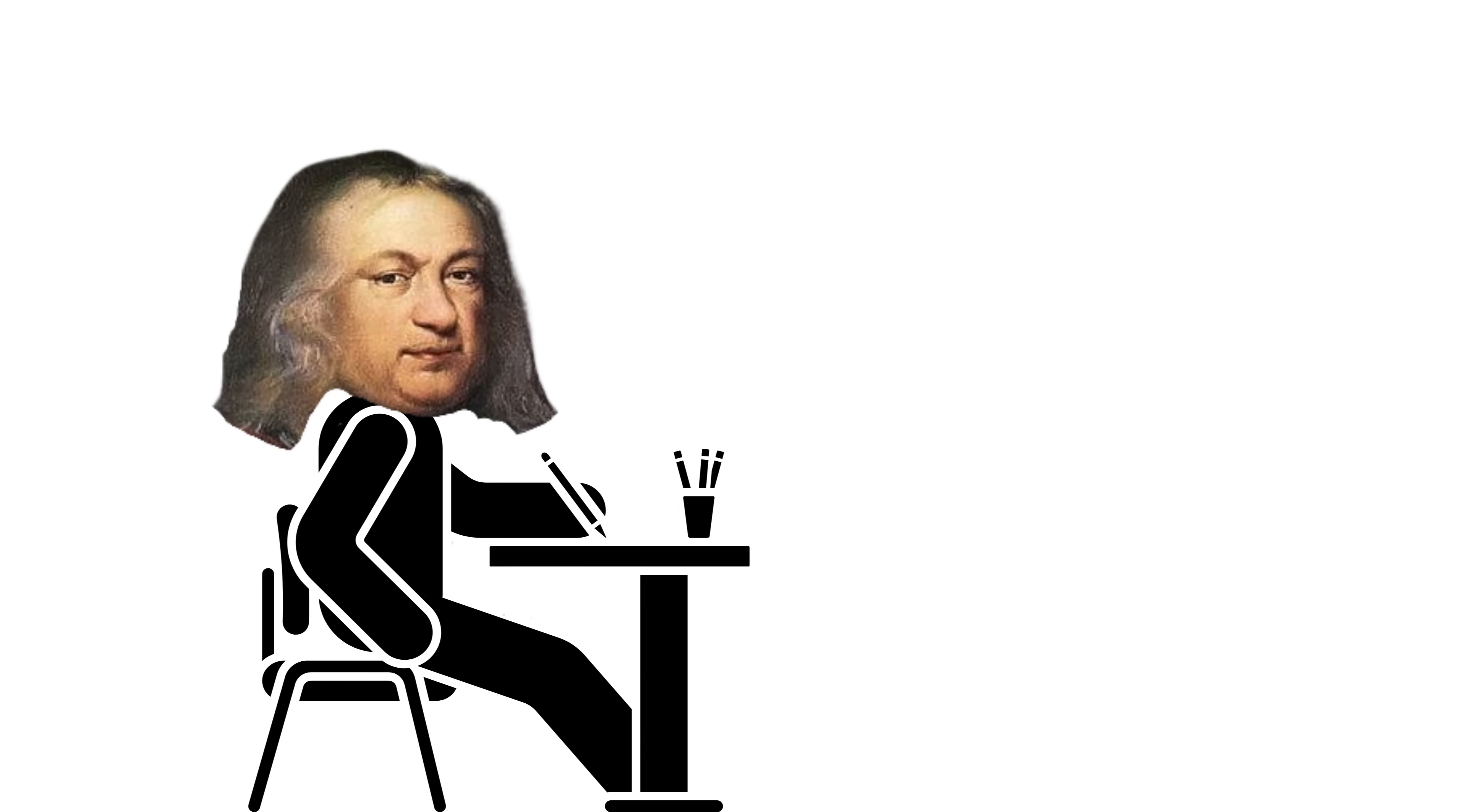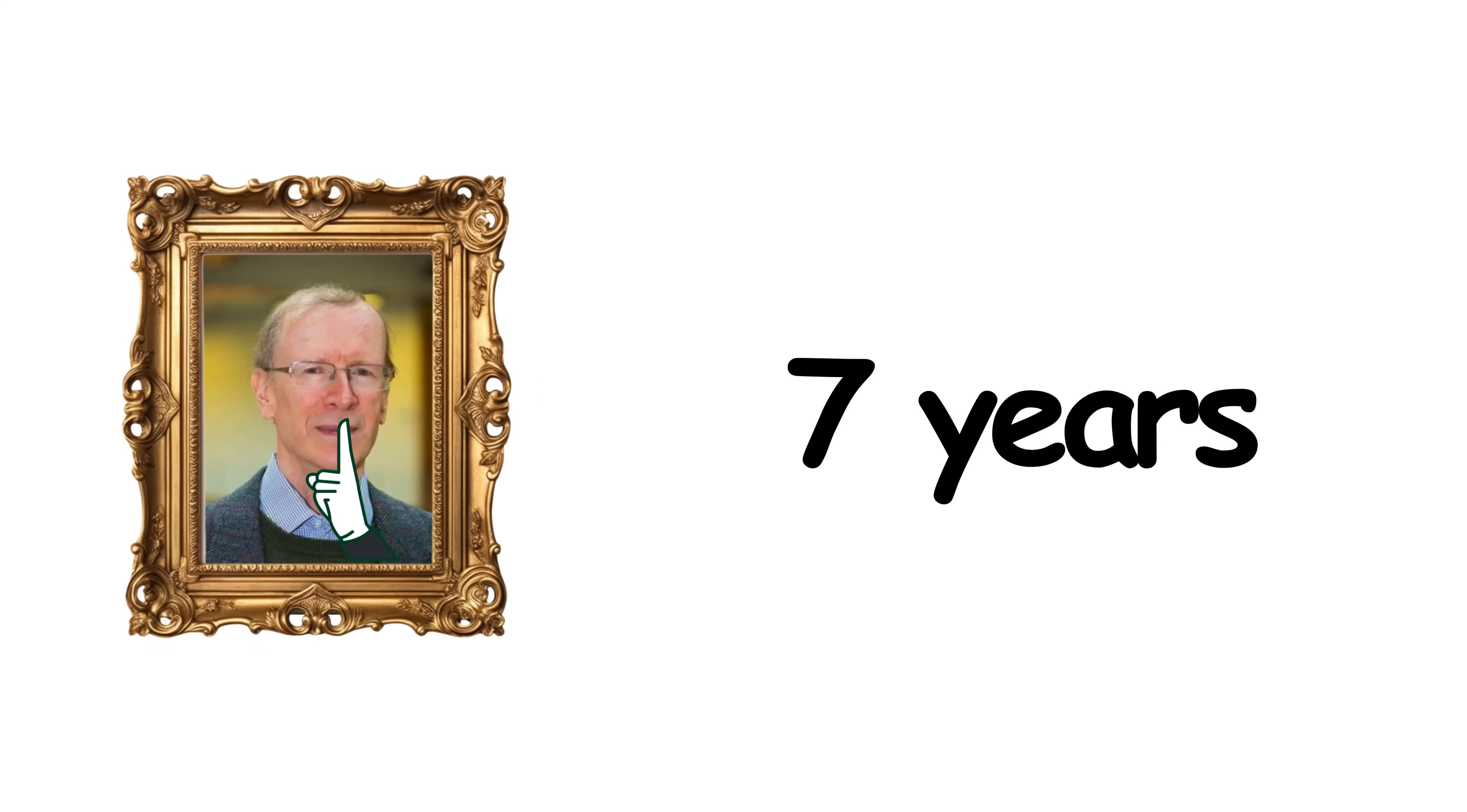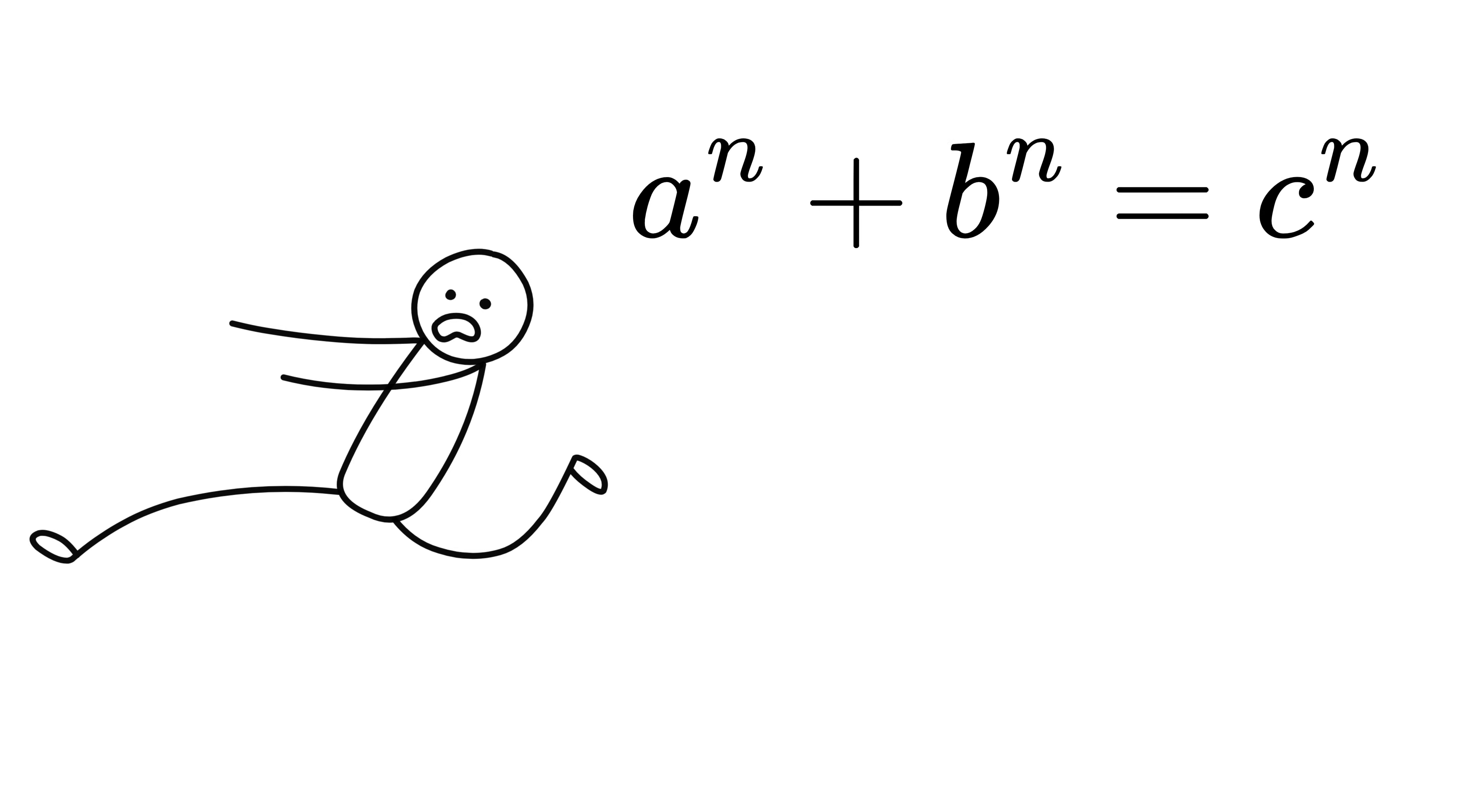Fermat wrote in the margin of his book copy Arithmetica that he had a truly marvelous proof, but it was never found. For centuries, great mathematicians tried without success. In 1994, Andrew Wiles, after seven years of secret work, presented a complete proof using advanced tools of number theory, including modular forms and elliptical curves. His solution connected entire branches of modern mathematics, finally solving a mystery that had haunted generations. His achievement made him a global mathematical celebrity.